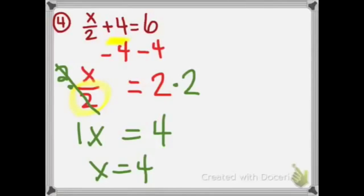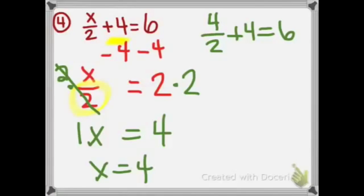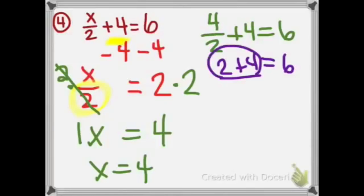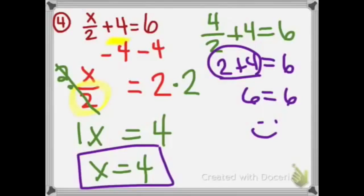If you don't believe it, you can check: 4 divided by 2 plus 4 equals 6. 4 divided by 2 is 2, plus 4 equals 6, and 2 plus 4 gives us 6 equals 6. So that's right. Our answer is x equals 4.